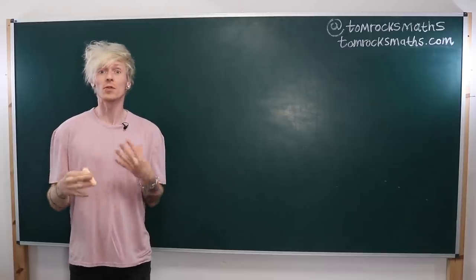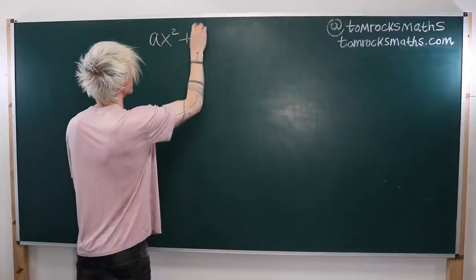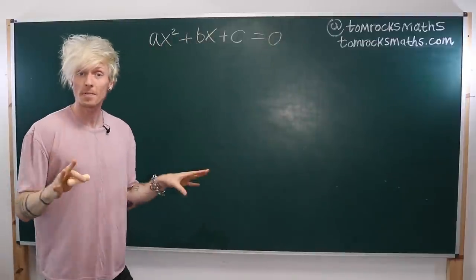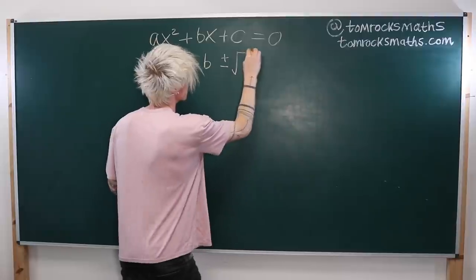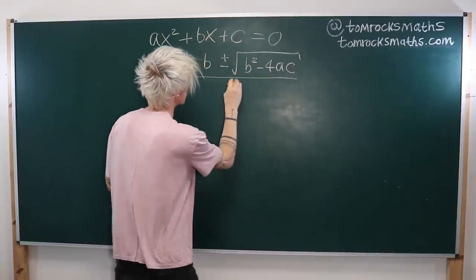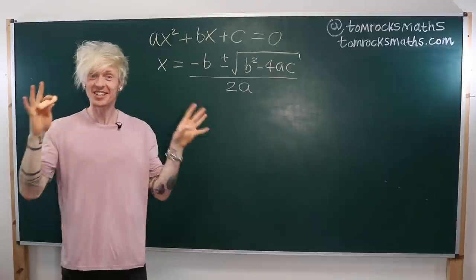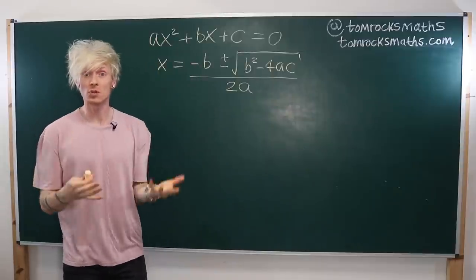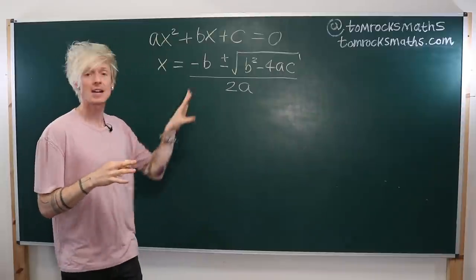To start with, let's remind ourselves what the formula actually looks like. Given a general quadratic equation ax² + bx + c = 0, the quadratic formula tells us that the solutions are given by x = (−b ± √(b² − 4ac)) / 2a. You've probably heard this so many times that it's now stuck in your head — knowing the formula means you can use it to solve any quadratic equation.